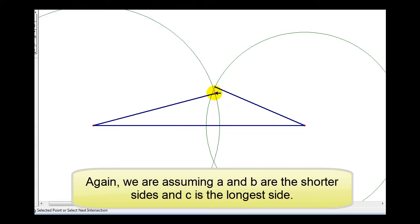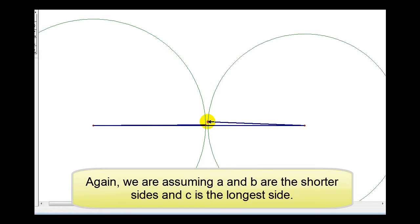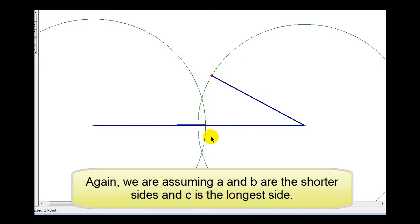Now, if A plus B was equal to C, we still would not be able to have a triangle, because we would just have segments lined up on top of each other. But as soon as A plus B is greater than C, we can form a triangle.